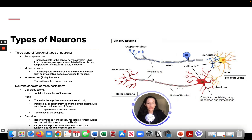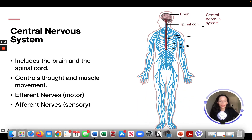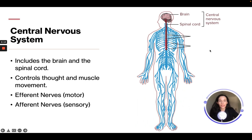Here are the three types of neurons: a sensory neuron, a relay neuron, and a motor neuron. The central nervous system consists of the brain and spinal cord, controls thought and muscle movement, and has efferent (motor) neurons and afferent (sensory) neurons.